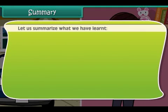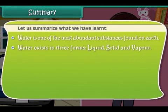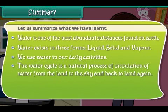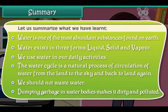Let's summarize what we have learned so far. Water is one of the most abundant substances found on earth. Water exists in three forms: liquid, solid, and vapor. We use water in our daily activities. The water cycle is a natural process of circulation of water from the land to the sky and back to land again. We should not waste water. Dumping garbage in water bodies makes it dirty and polluted.